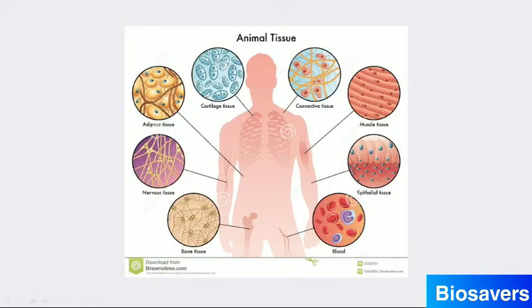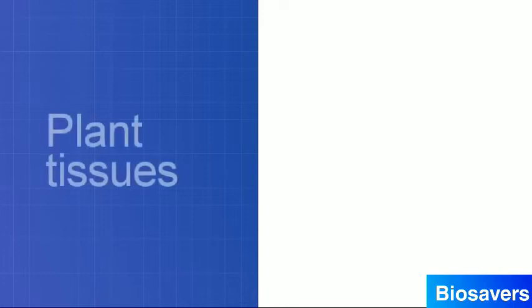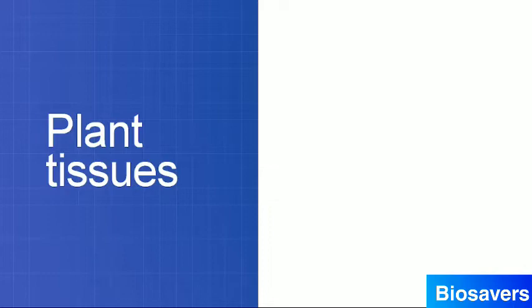Different groups of tissues are formed because one type of tissue cannot perform all the body functions. So tissues are of various types, based on where they are present and what their structure is — they perform different functions and are therefore of different types. Now our animal body and plant body are quite different. So can they have the same type of tissues? No, because plants perform different functions and animals perform different functions. We don't perform photosynthesis; likewise, plants don't perform locomotion. That's why plants and animals have different kinds of tissue.